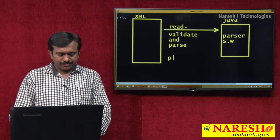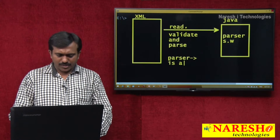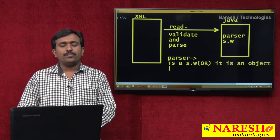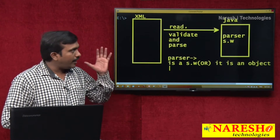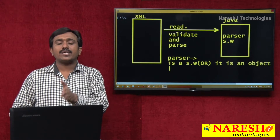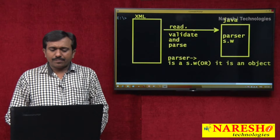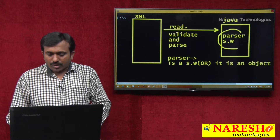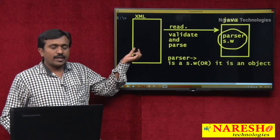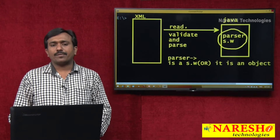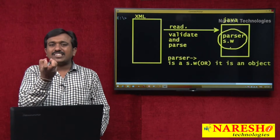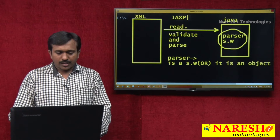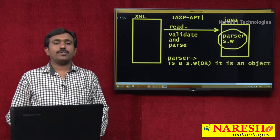What is actually a parser? Simply, a parser is a software or an object. The parser software is used to read, validate, and parse the XML documents. So for this requirement in the Java program, a parser object is required to be created. To create that parser software, it is required to work with the JAXP API.